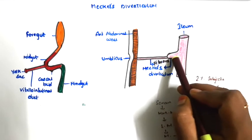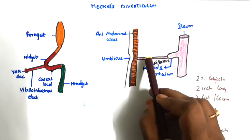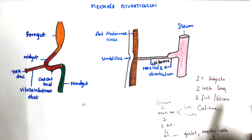Meckel's Diverticulum is seen in 2% of subjects and is 2 inches long. It is located 2 feet or 60 centimeters proximal to the ileocecal valve.